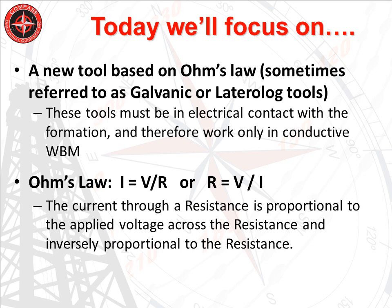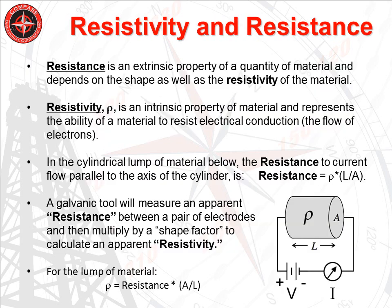By way of review, Ohm's Law says that if I apply a voltage V across a lump of material, the amount of current I that will flow through the lump is proportional to the voltage and inversely proportional to a property of the lump called resistance. Resistance is an extrinsic property of the lump because it depends on the size and shape of the lump times the resistivity of the material. Material resistivity is an intrinsic property of the material and does not depend on the dimensions, only the material itself.